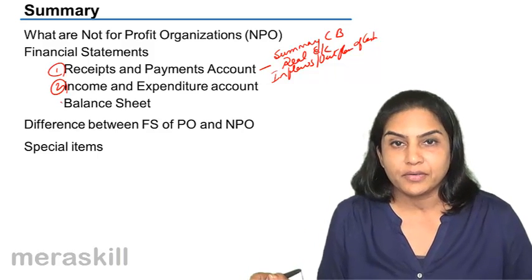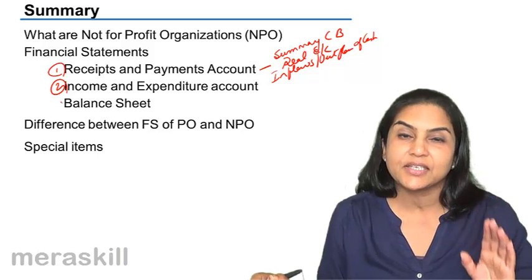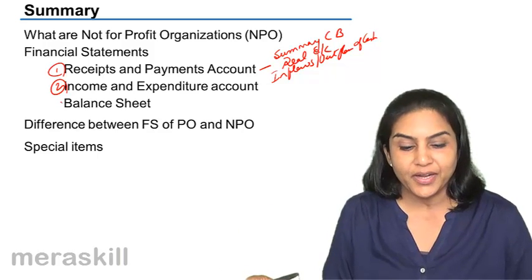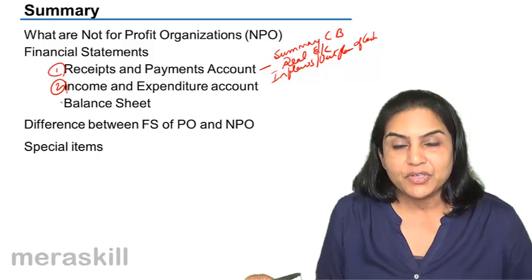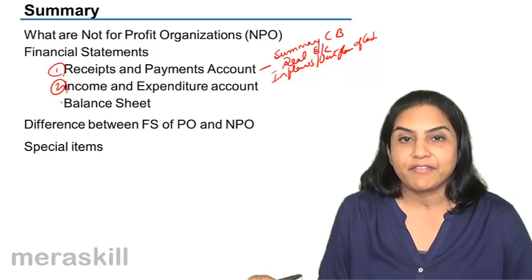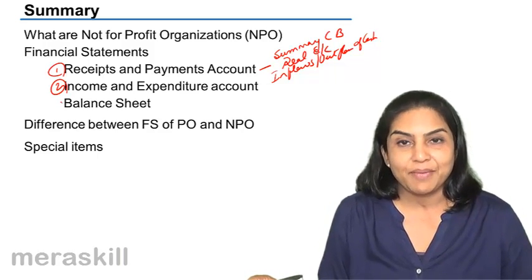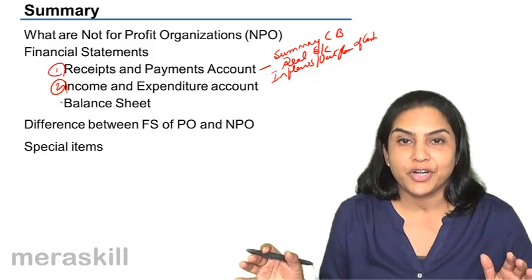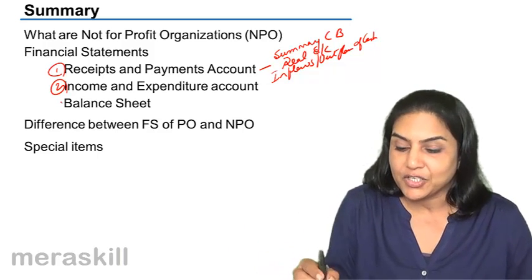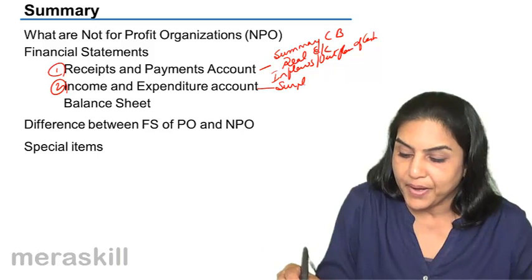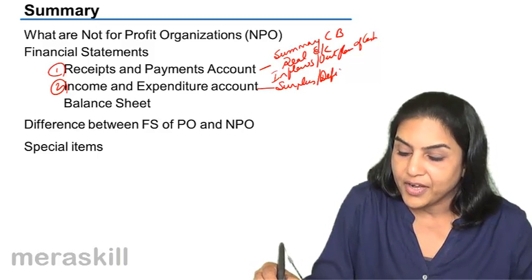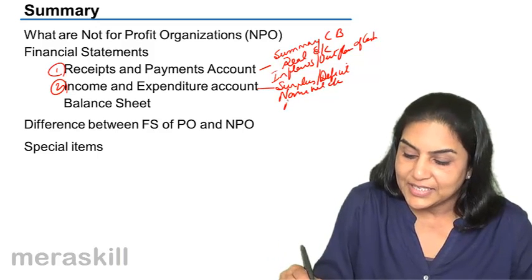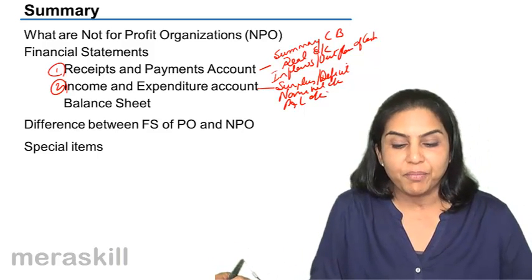Surplus or deficit — deficit is the excess of expenditure over income. From the receipts and payments account, we take all the revenue items and bring them to the income and expenditure account, make adjustments for accruals and outstandings, adjust for depreciation, and arrive at the surplus or deficit. This account is in the nature of a nominal account, and it is similar to the profit and loss account of a profit organization.